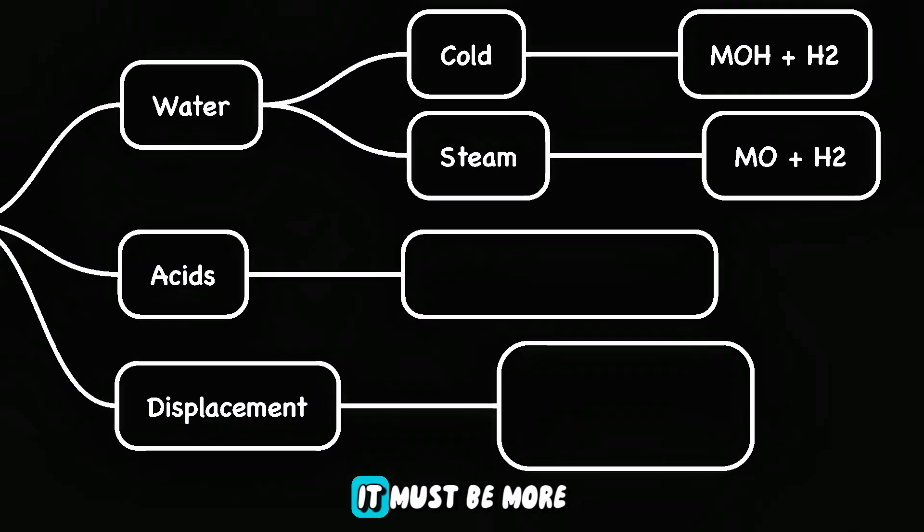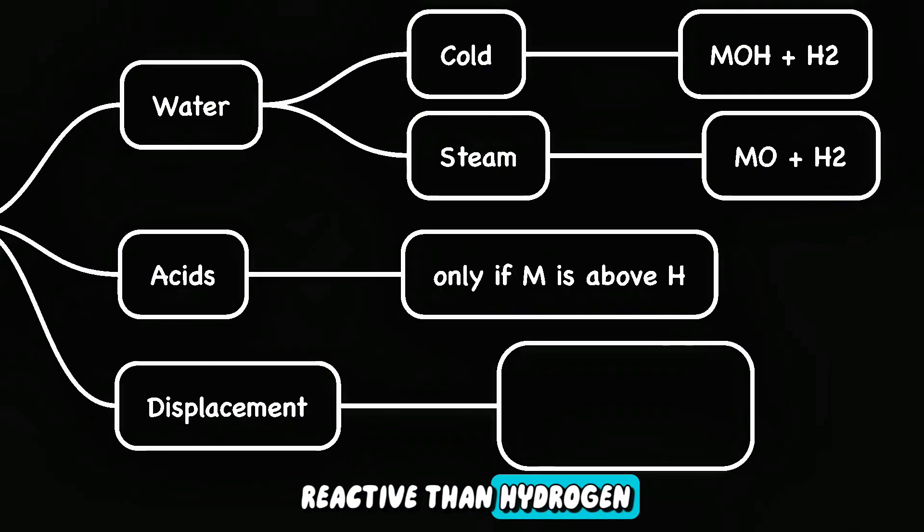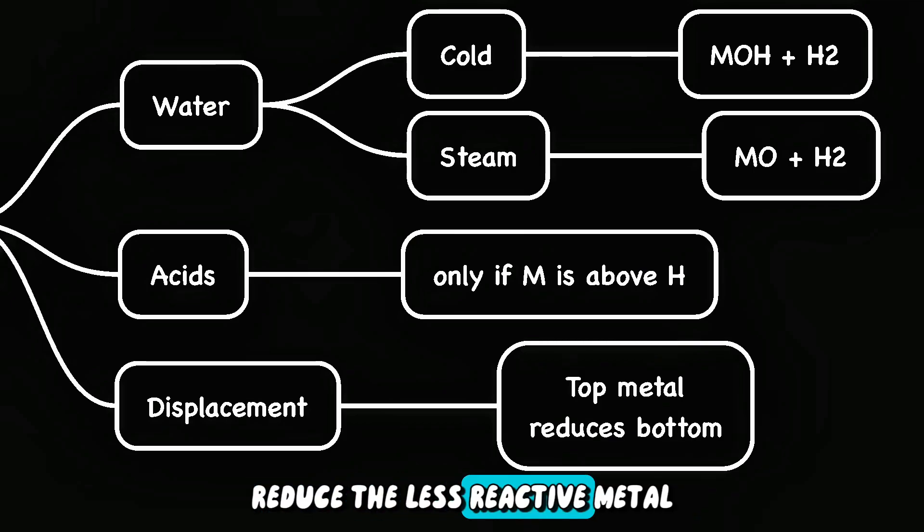For a metal to react with acid, it must be more reactive than hydrogen. In displacement reactions, metals that are more reactive reduce the less reactive metal.